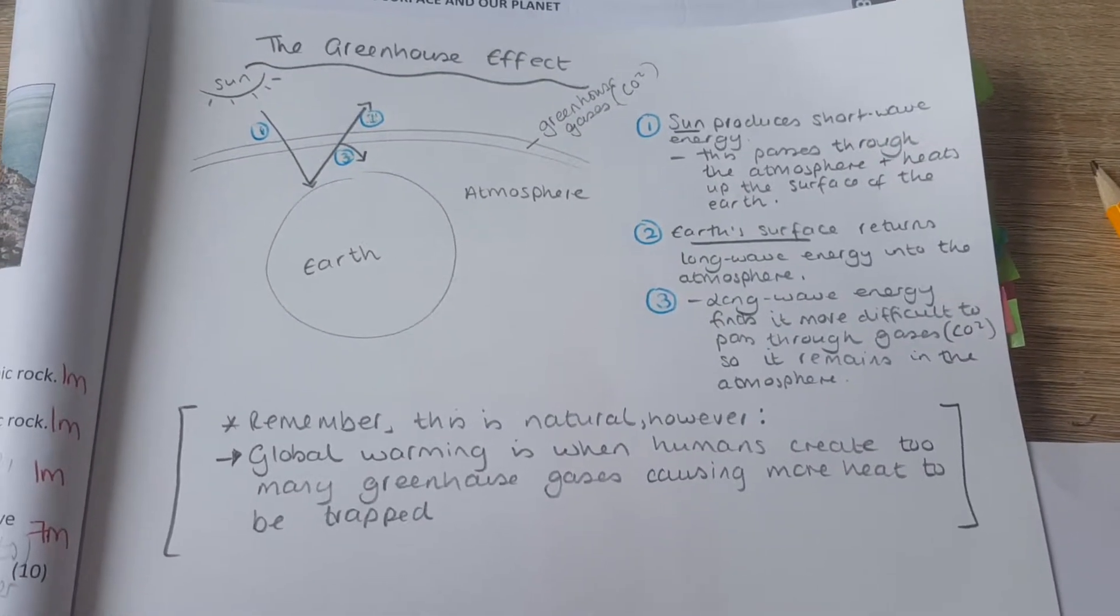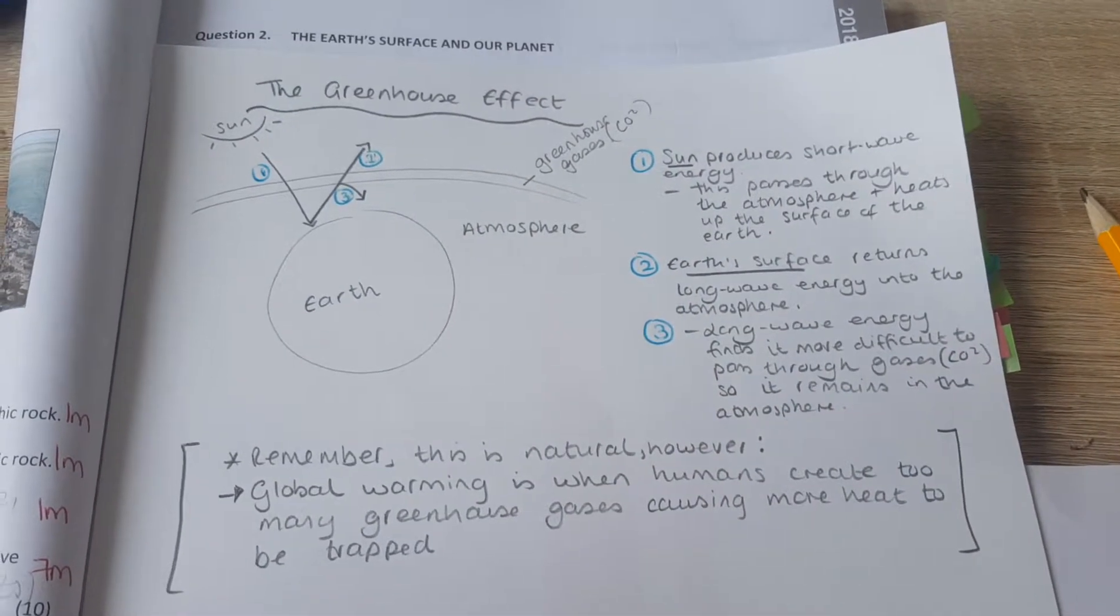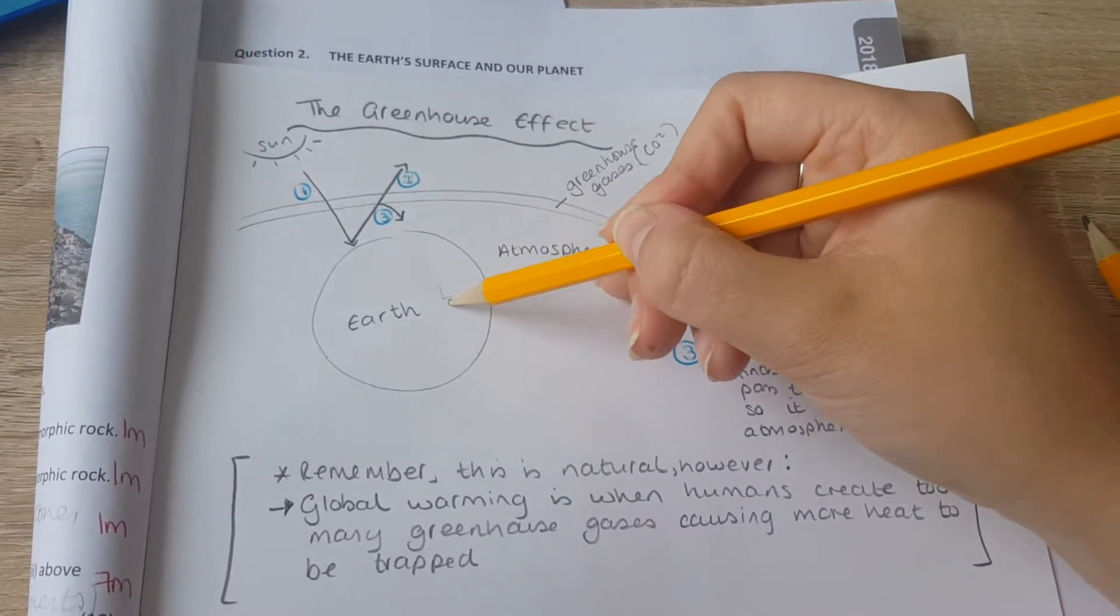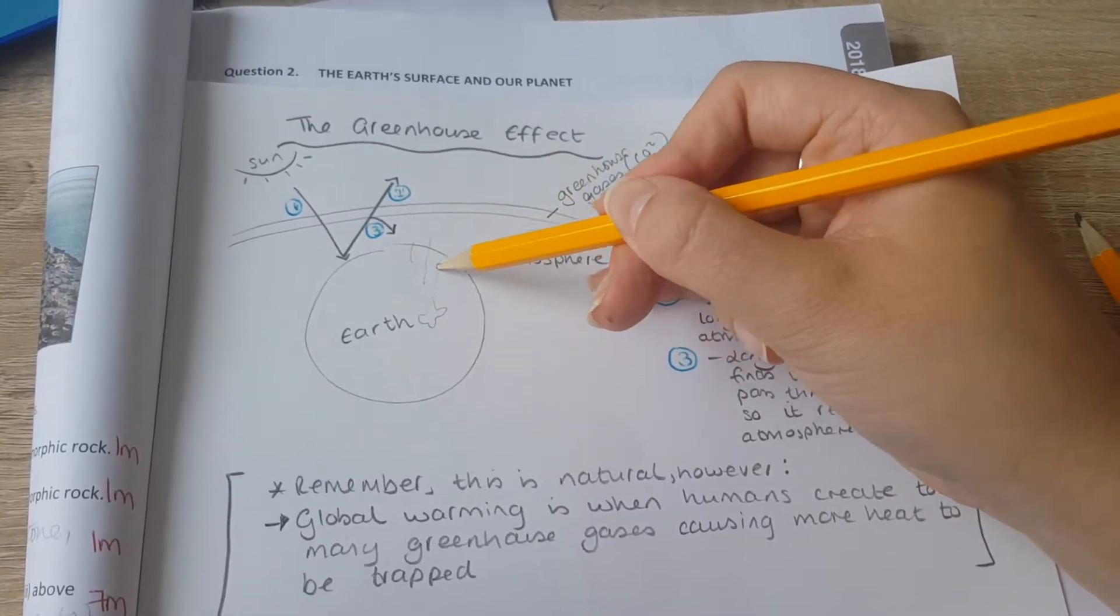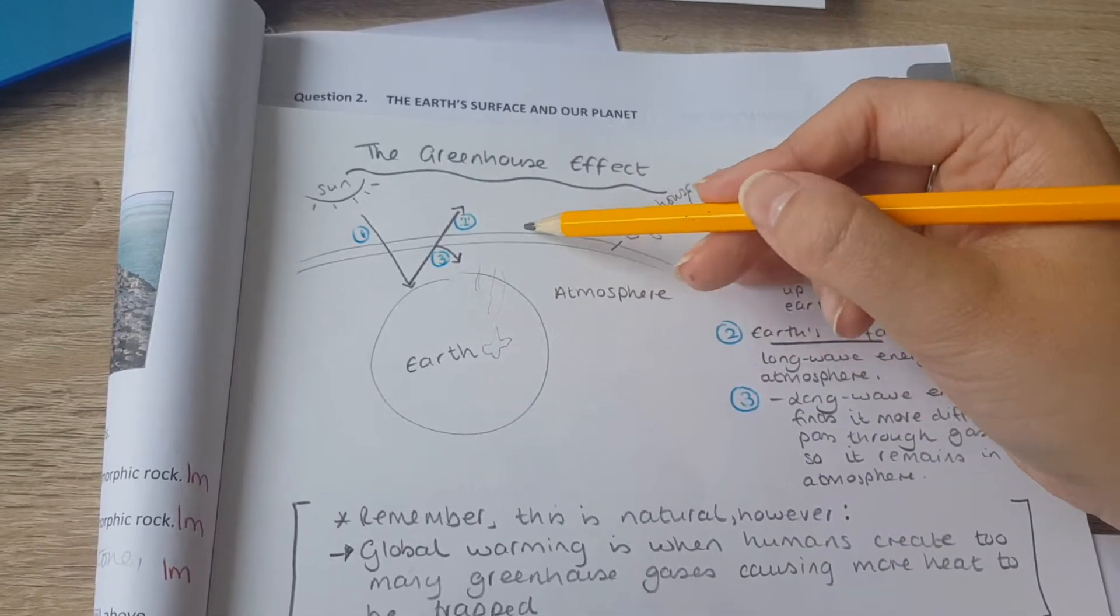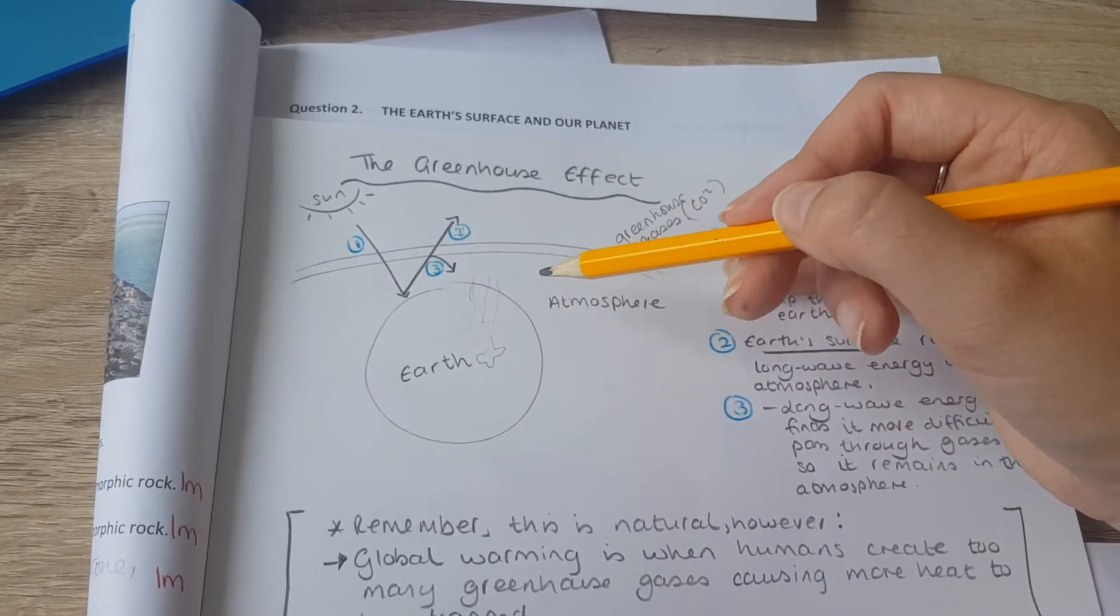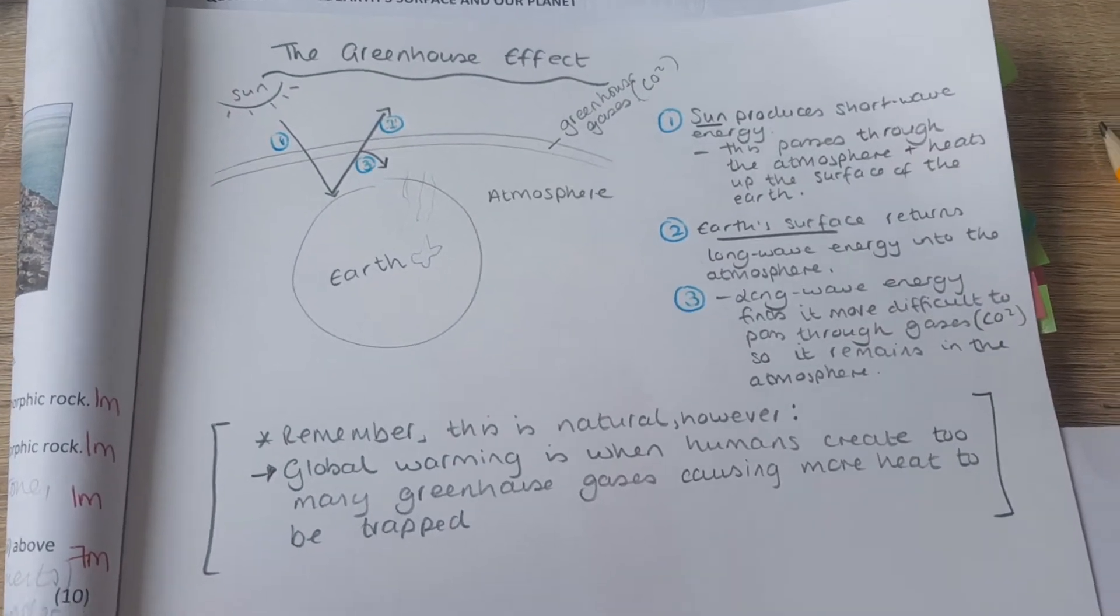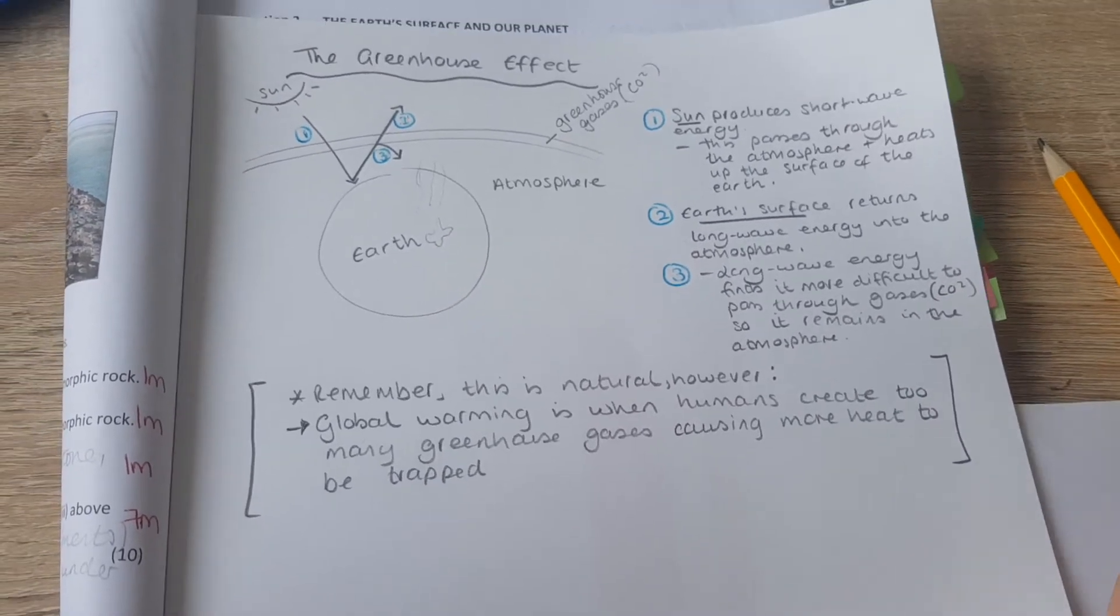Now that's absolutely natural, that's fine. Remember, it's natural. However, global warming is when humans create too many greenhouse gases, causing more heat to be trapped. Because of cars and loads of greenhouse emissions, CO2, creating a blanket around the Earth. If this blanket's thicker and thicker, all the gases are going to remain in the Earth, ultimately heating up the Earth. That's how our ice caps are melting, it's becoming warmer and warmer. Don't get the greenhouse effect mixed up with global warming. Just know the difference between them.